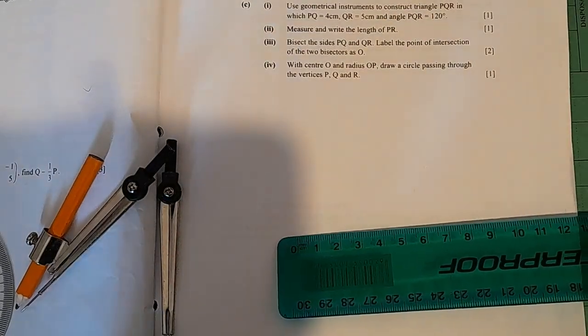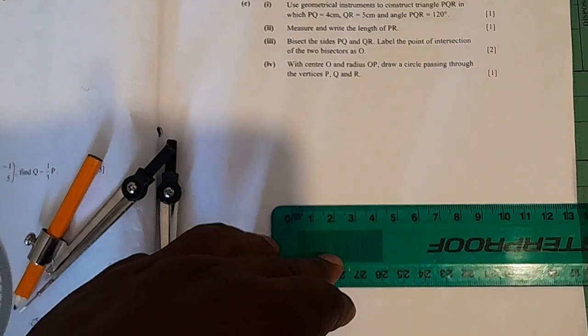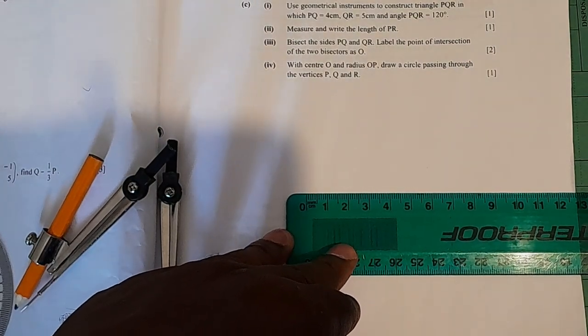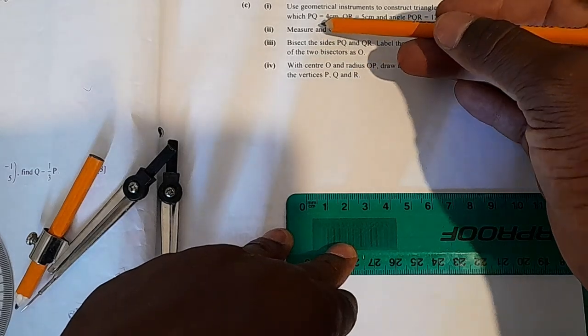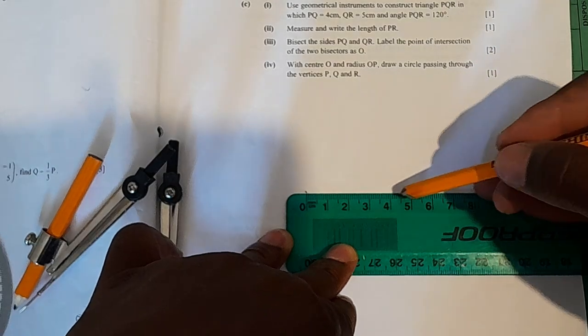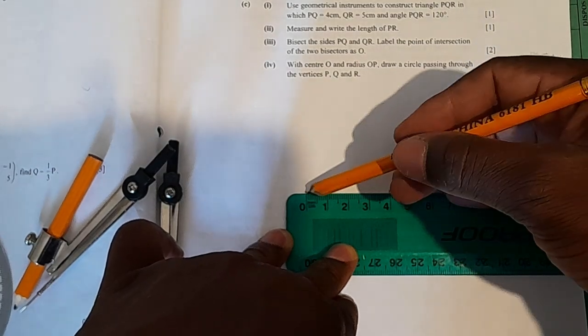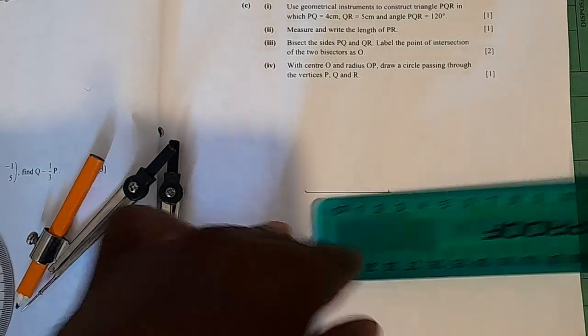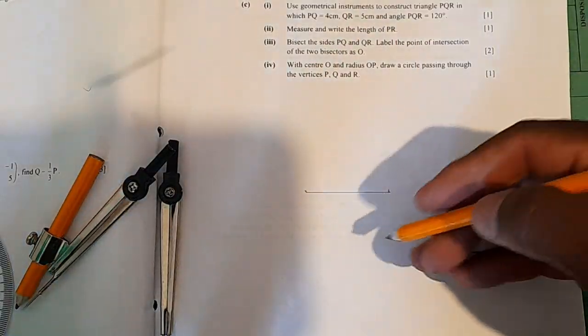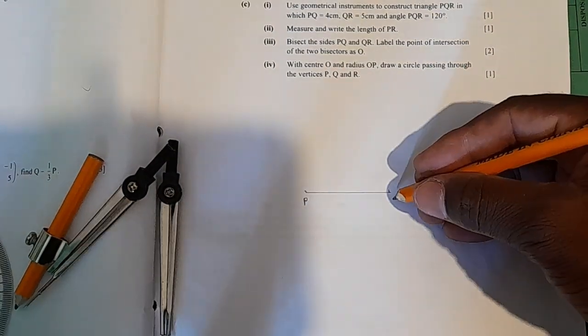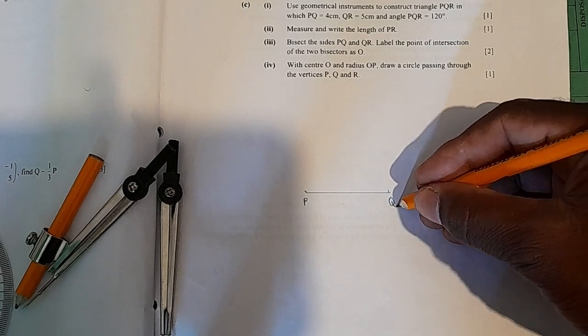Use geometrical instruments to construct triangle PQR. The triangle will have vertices P, Q, and R, in which PQ, take the first line as the base line. PQ is equal to 4 centimeters, so we pick 4 centimeters from 0 to 4. That's 4 centimeters. We need to indicate the points, that is P and that is Q.